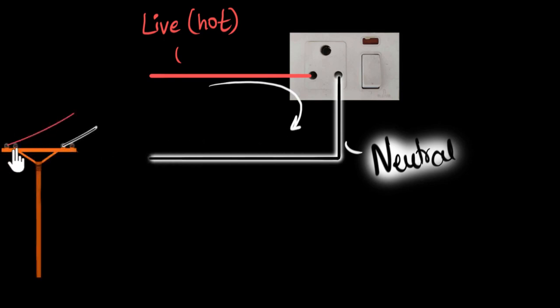Electricity comes from the electric poles to our house through the live wire and it goes back through the neutral wire. Simple, right? But that doesn't make sense, mainly because we're not dealing with one directional current.